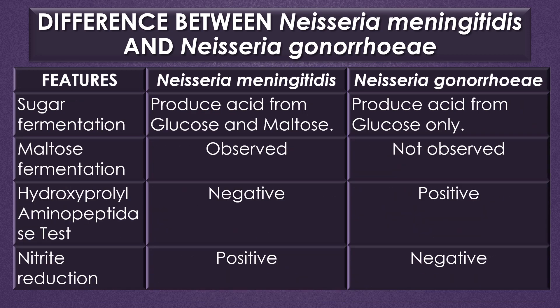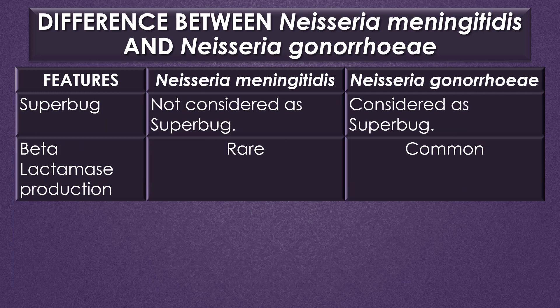In sugar fermentation, meningococci produce acid from glucose and maltose, but gonococci produce acid from glucose only; maltose fermentation is observed only in meningococci. The hydroxyprolyl aminopeptidase test shows a negative reaction for meningococci and a positive reaction for gonococci. The nitrate reduction test is positive for meningococci but negative for gonococci. Gonococci is considered a superbug, while meningococci is not. Beta-lactamase production is rare in meningococci but common in gonococci.